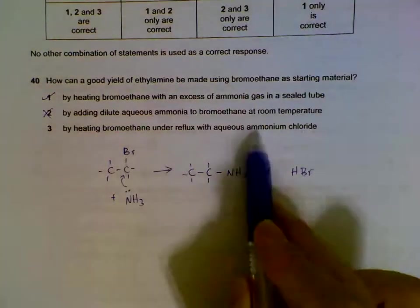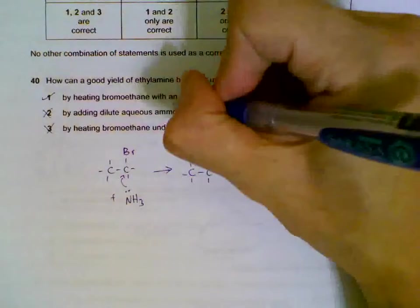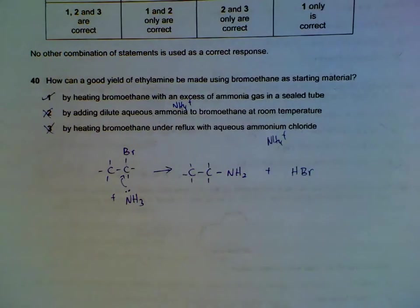The second one—aqueous ammonia will not react. Bromoethane with aqueous ammonium chloride will also not react. Your ammonia basically becomes ammonium here, and it will not be a successful nucleophile.